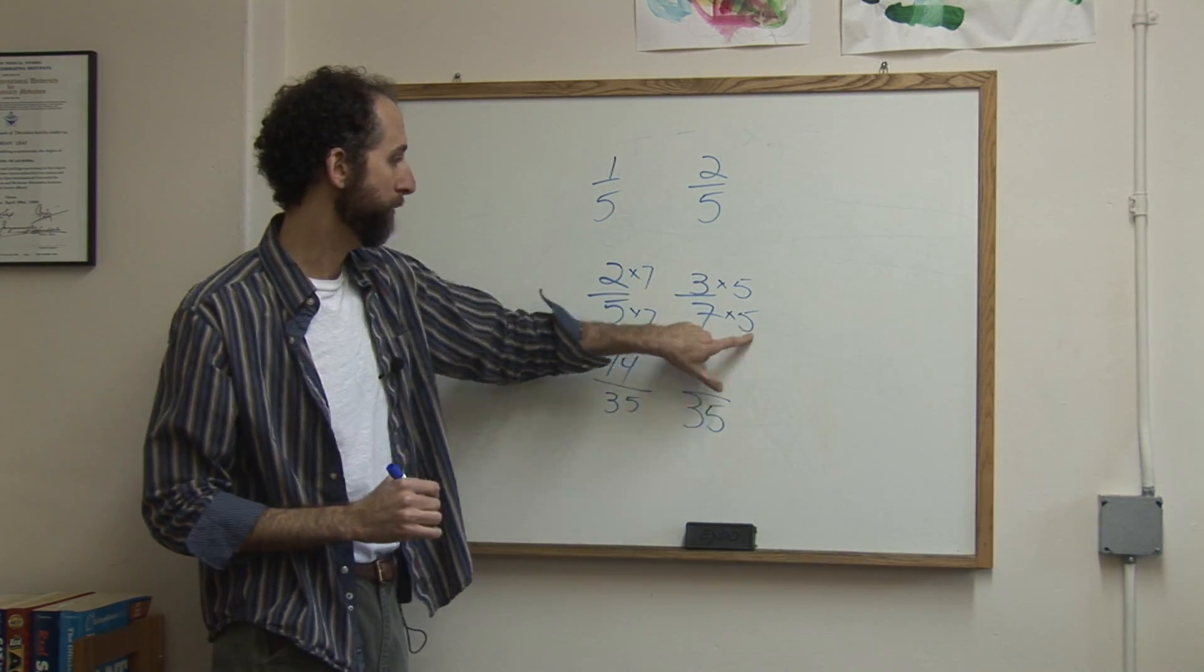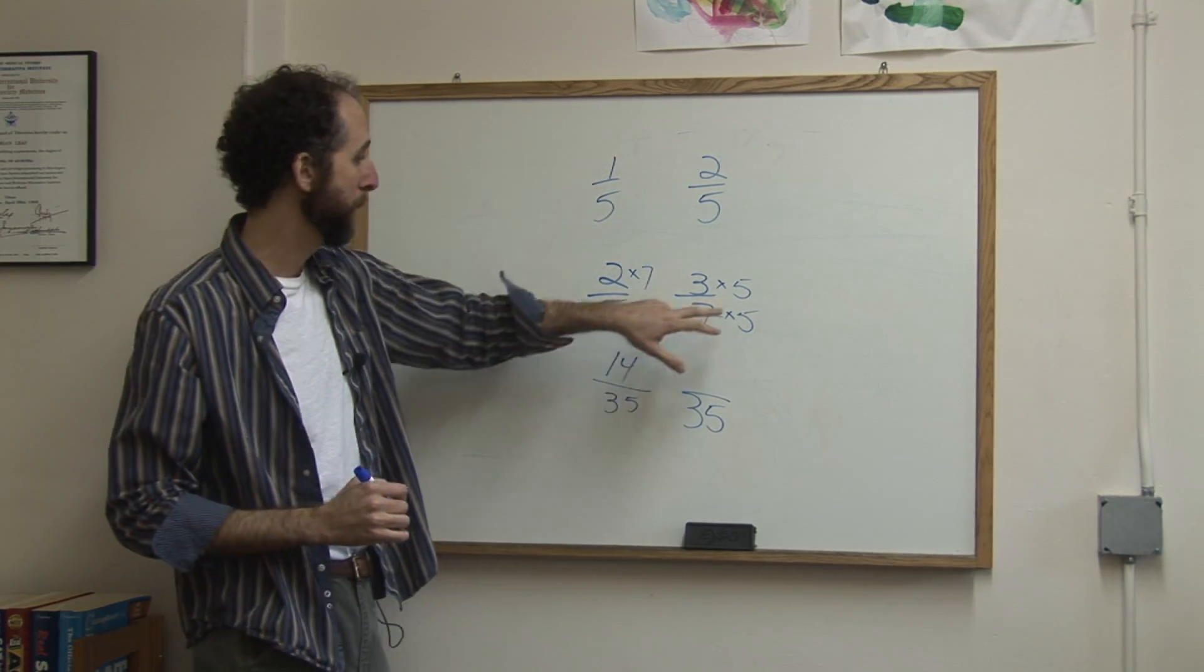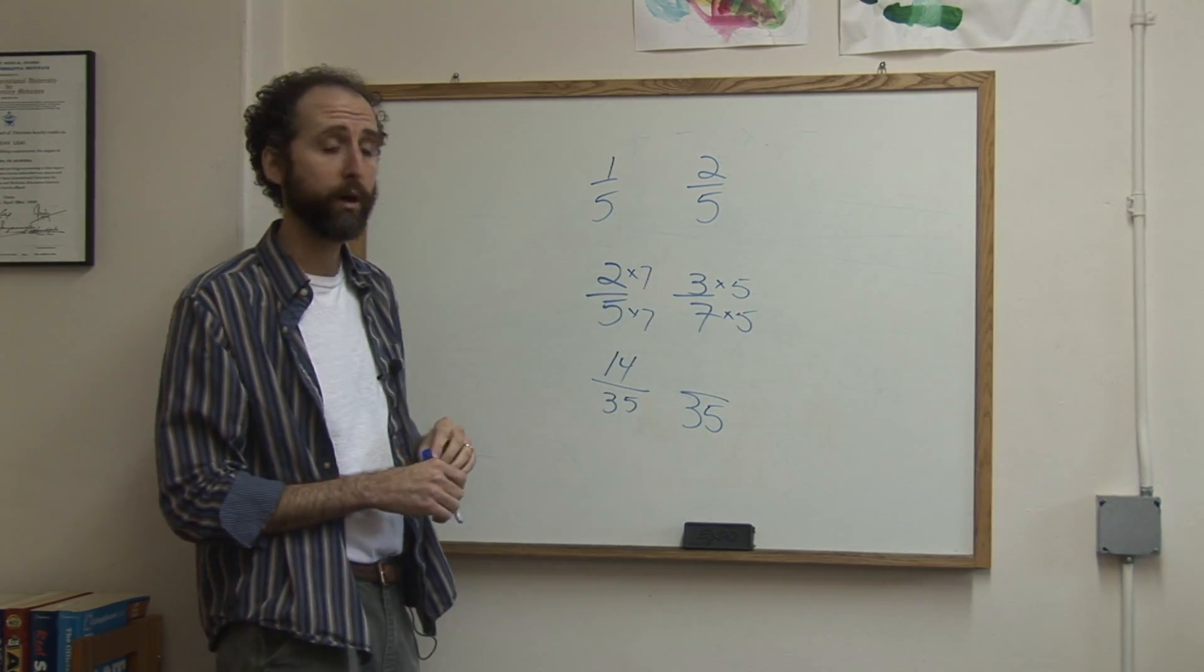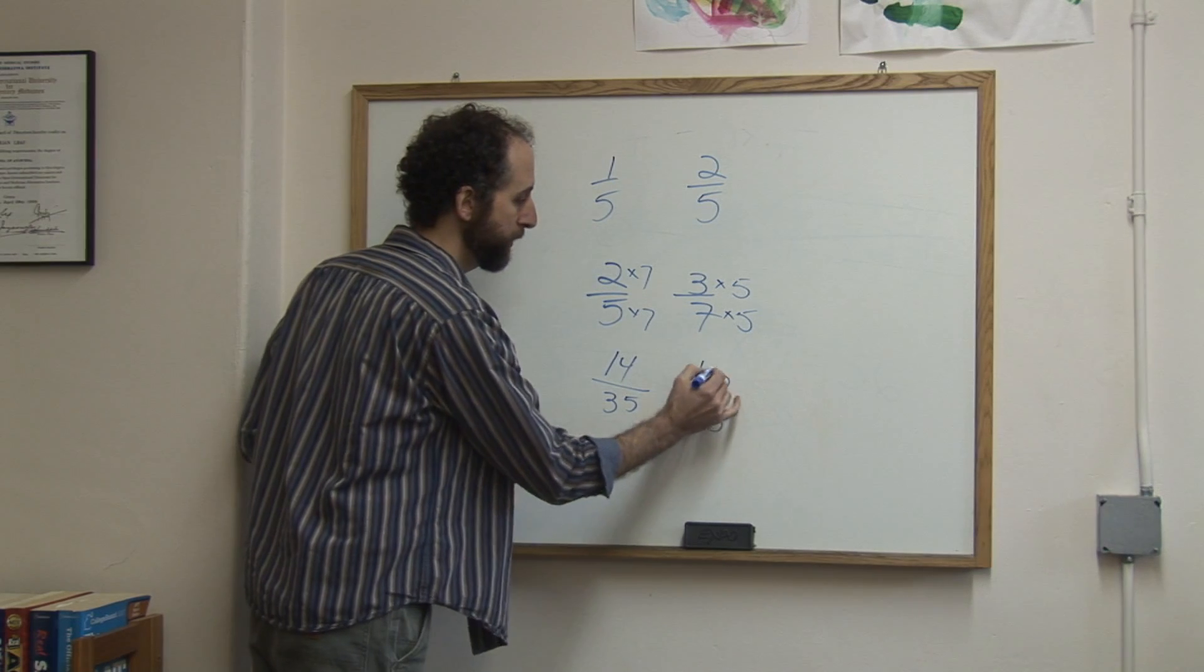So I'm going to multiply five by seven to get the thirty-five, so I'll multiply five on top as well. Five times three is fifteen.